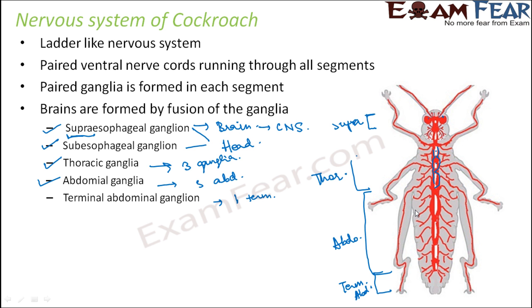These ganglia are joined by paired longitudinal connectives on the ventral side. If you look from the ventral end, you will see that the ganglia are connected to each other by longitudinal structures called connectives. Most of the nervous system is visible from the ventral side — from the dorsal side you mostly see the digestive tract, while from the ventral side you see the nerve cords.